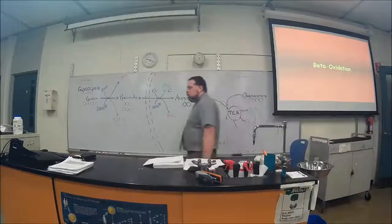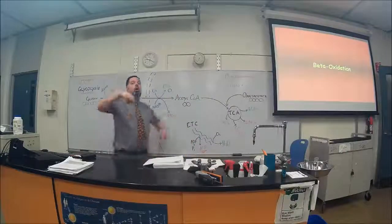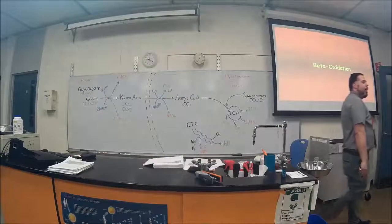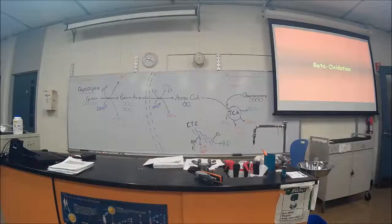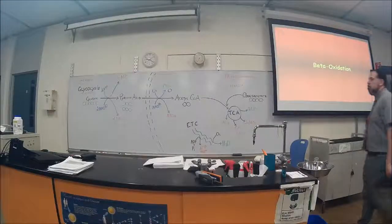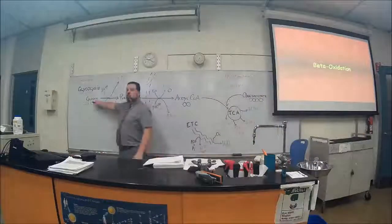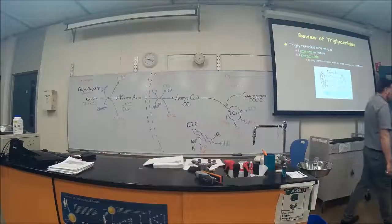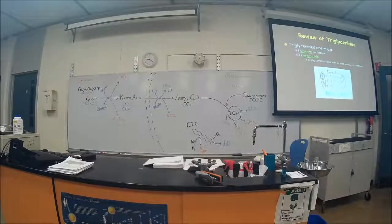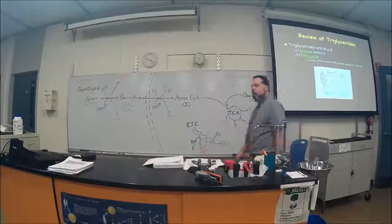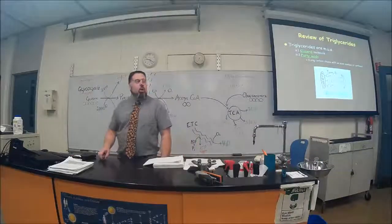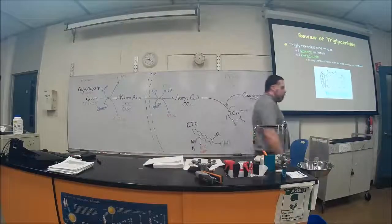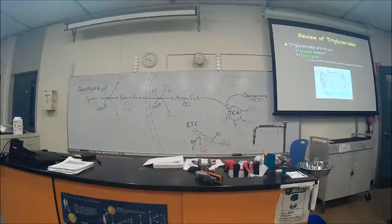Now let's talk about beta oxidation — this is about fats and how we get energy from them. I showed you what we do with sugars. A triglyceride is a fat, made up of one glycerol molecule and three fatty acids. We talked about that before; that's why we did all the chemistry before — we're building on this.